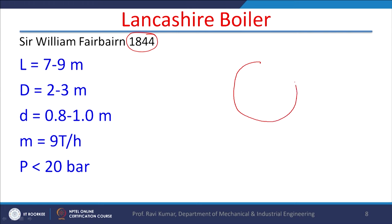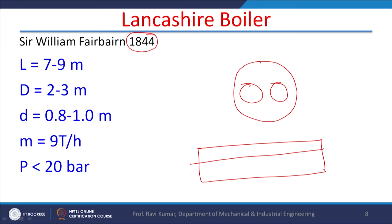We will start with the Lancashire boiler — a very popular and classical boiler. It was introduced in the year 1844. The length of this boiler is between 7 to 9 meters, and it can go up to 10 meters; the diameter is 2 to 3 meters. There is a shell — remember it is a fire tube boiler — so the shell will be filled with water and the flue gases will be flowing inside tubes fixed within the shell. There are two tubes in this boiler, and from a side view you will see only one tube.